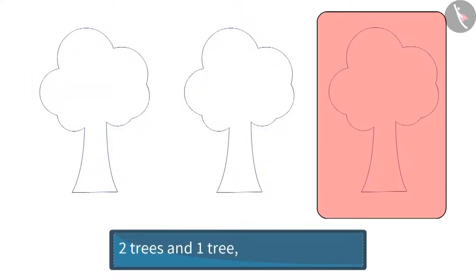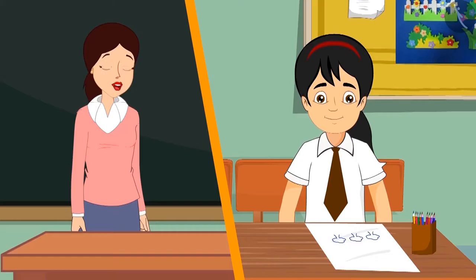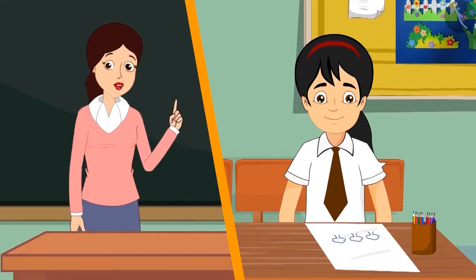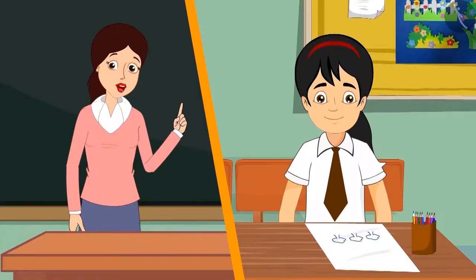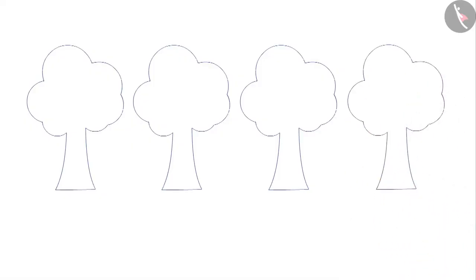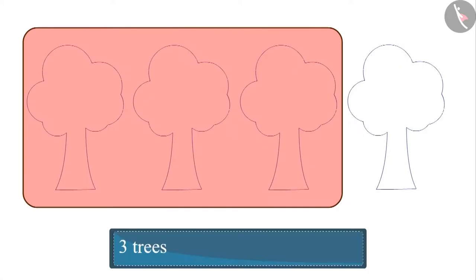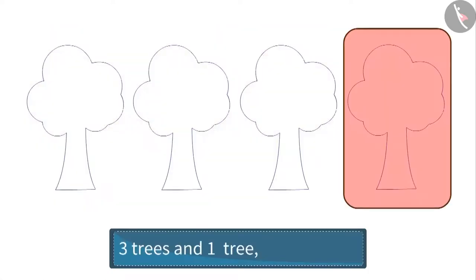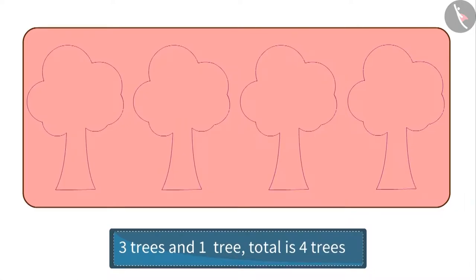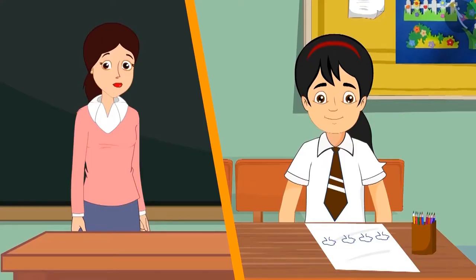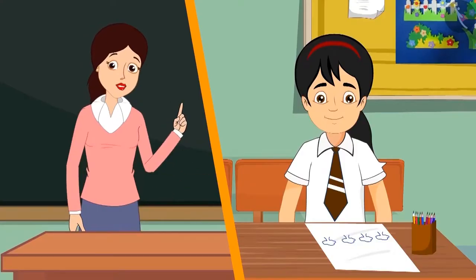So now in total there are three trees. Very good, Pinky. Okay, suppose if I draw one more tree along with these three trees, so how many trees will be there in total? Three trees and one more tree, so in total there are four trees. Very good, Pinky. Okay, if I make one more tree along with these four trees, then how many trees will be there?